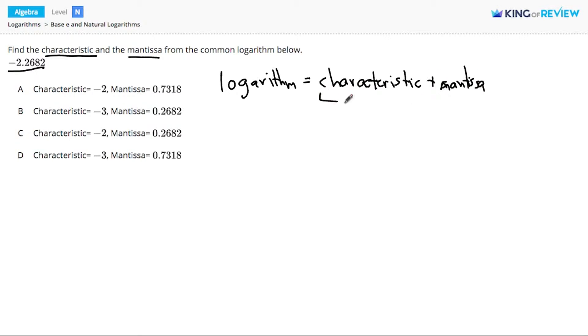The characteristic represents an integer, a whole number that could be positive or negative, and the mantissa is a decimal, the decimal part of the logarithm that we add.